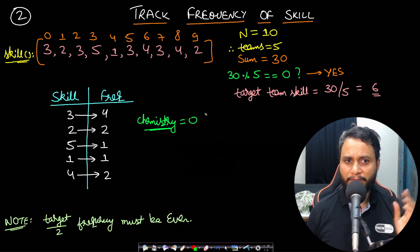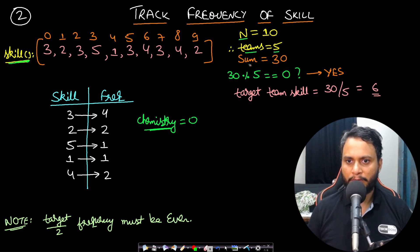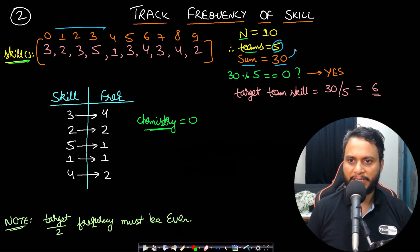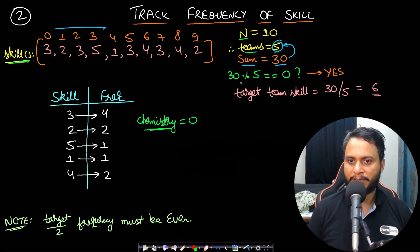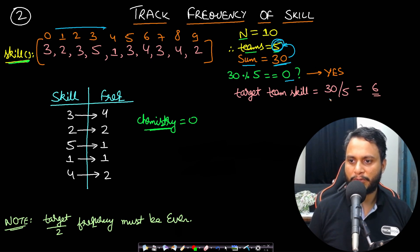Let's apply this pairing intuition with a dry run using a frequency map. Given a skills array with 10 players, the number of teams is 5. The sum is 30, and 30 mod 5 = 0, so it is divisible. The target sum per team is 30 / 5 = 6. We iterate through the skill array, build a hash map storing the frequency of each skill value.